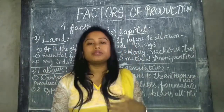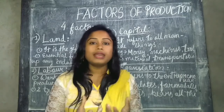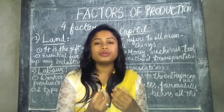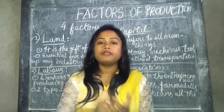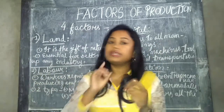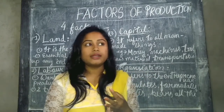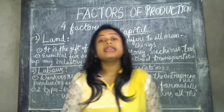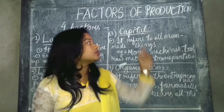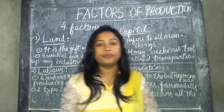The third factor is capital. Capital refers to all man-made things, like money — which man has made. Without money, we cannot even have the courage to do a business activity. Capital includes money, machines, buildings, tools and equipment, and means of transportation. Only if we have money can we buy all these things and set up our company. All these are known as capital.